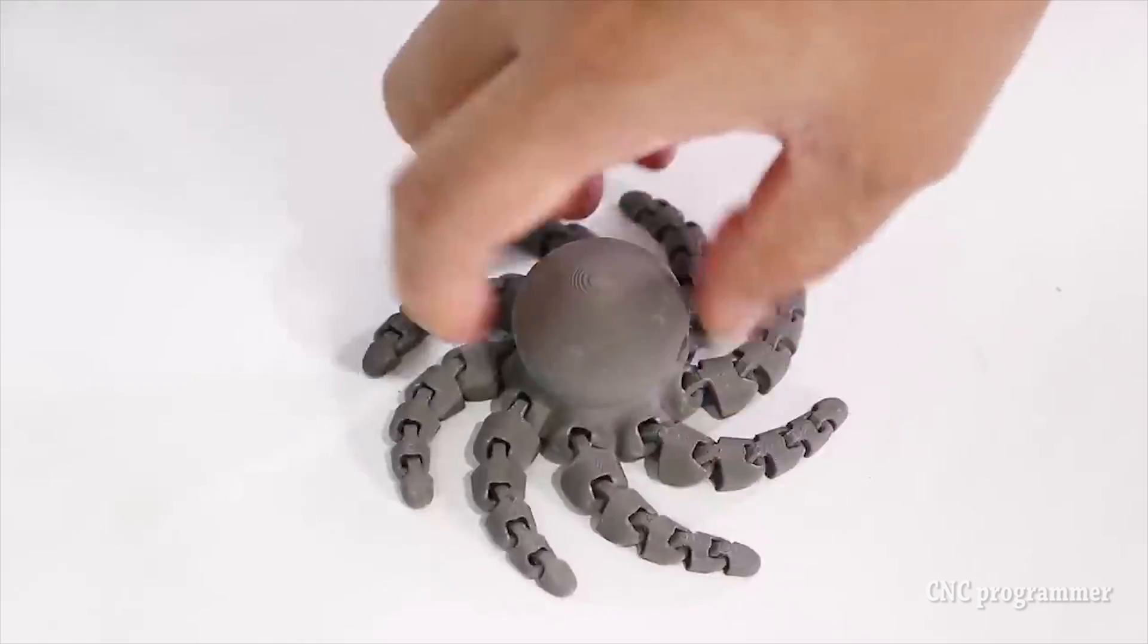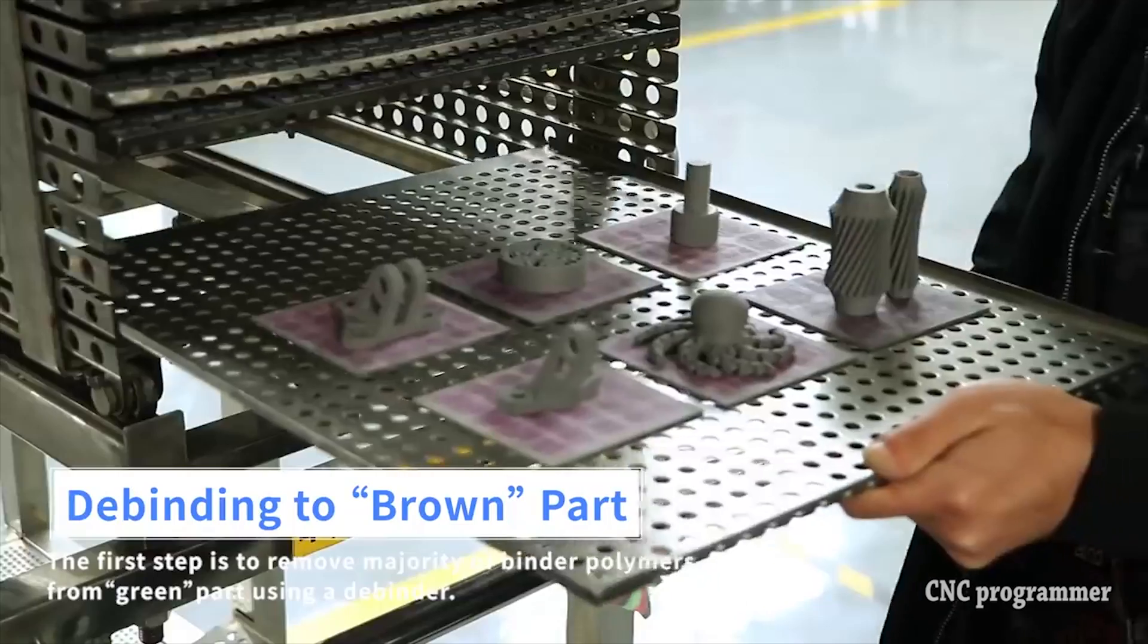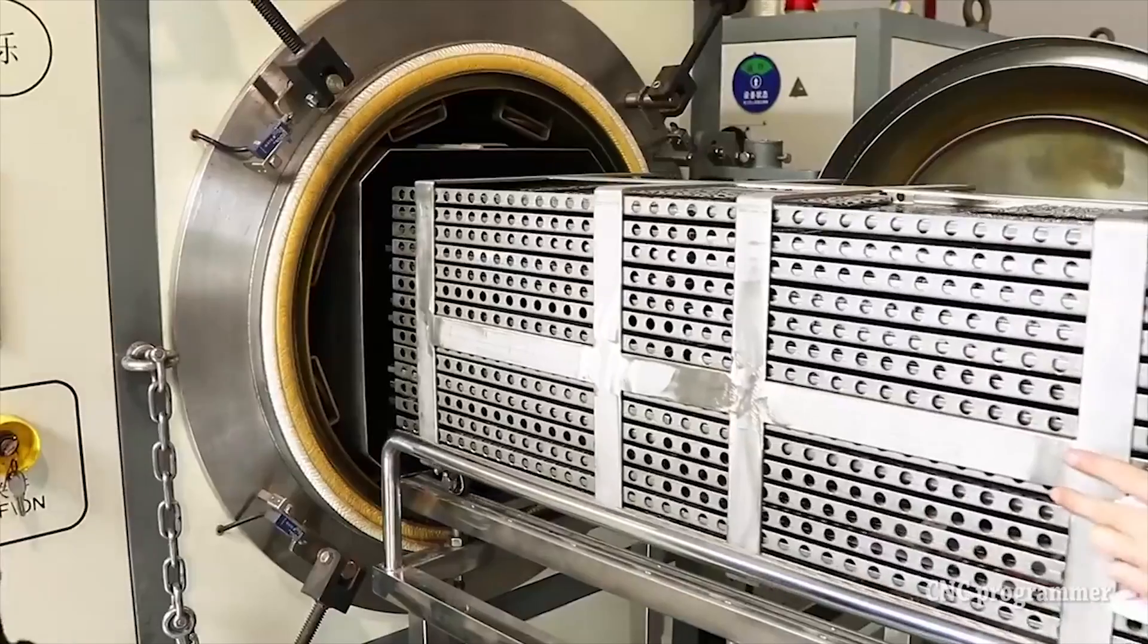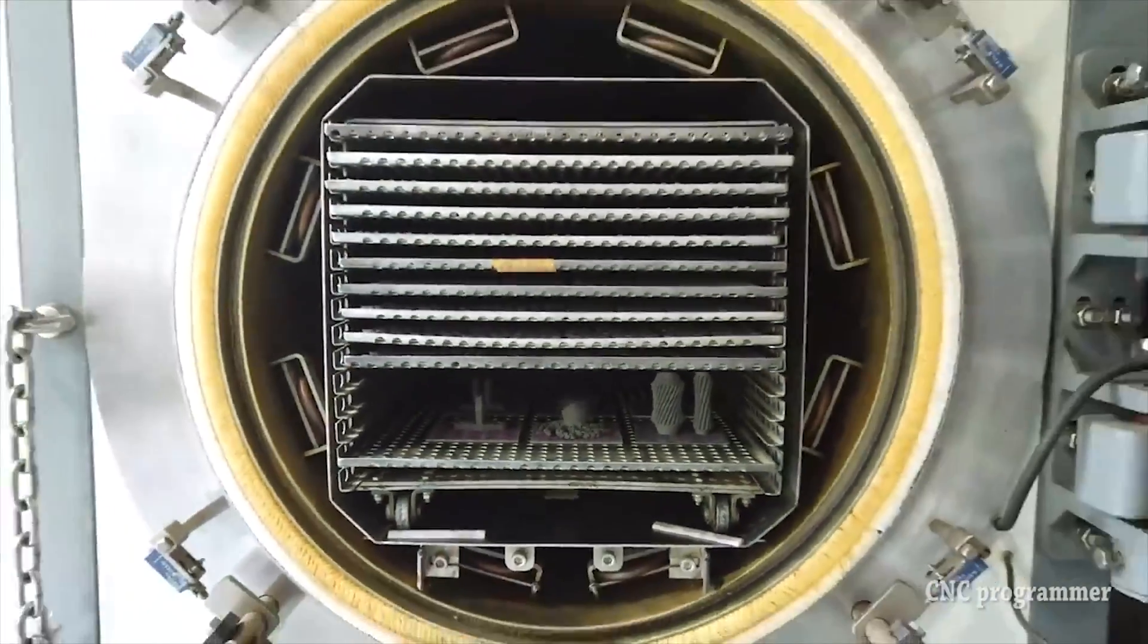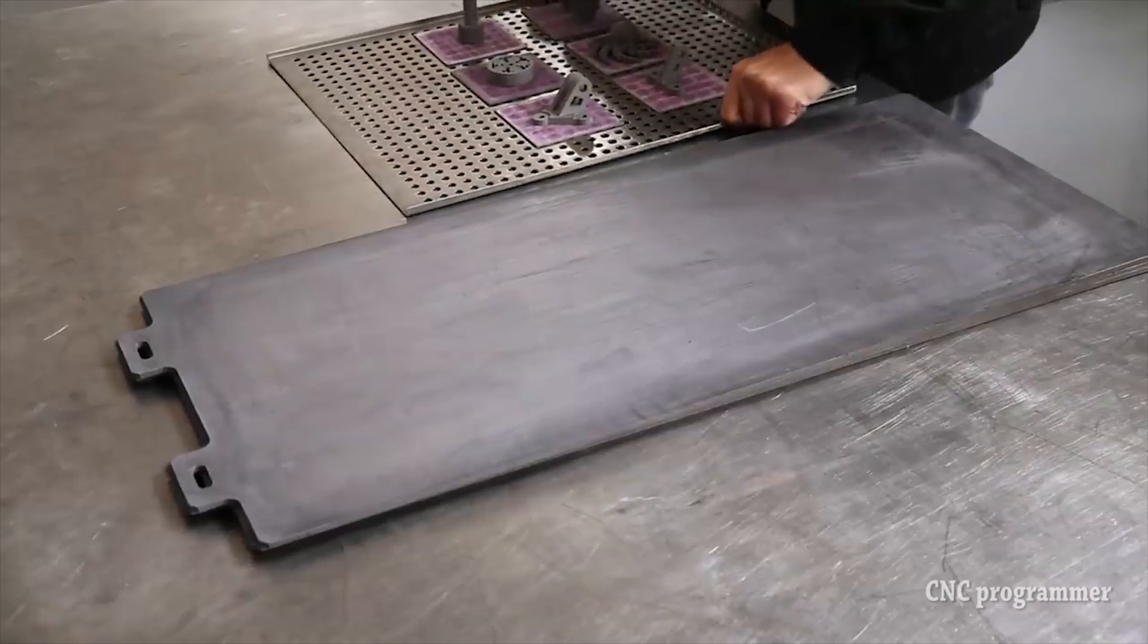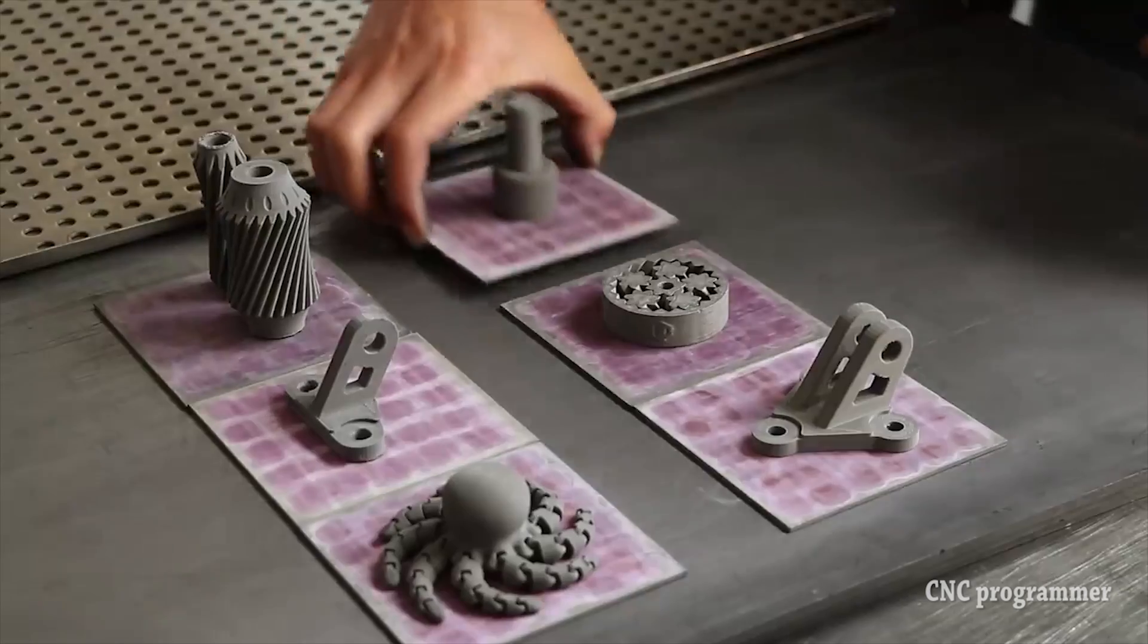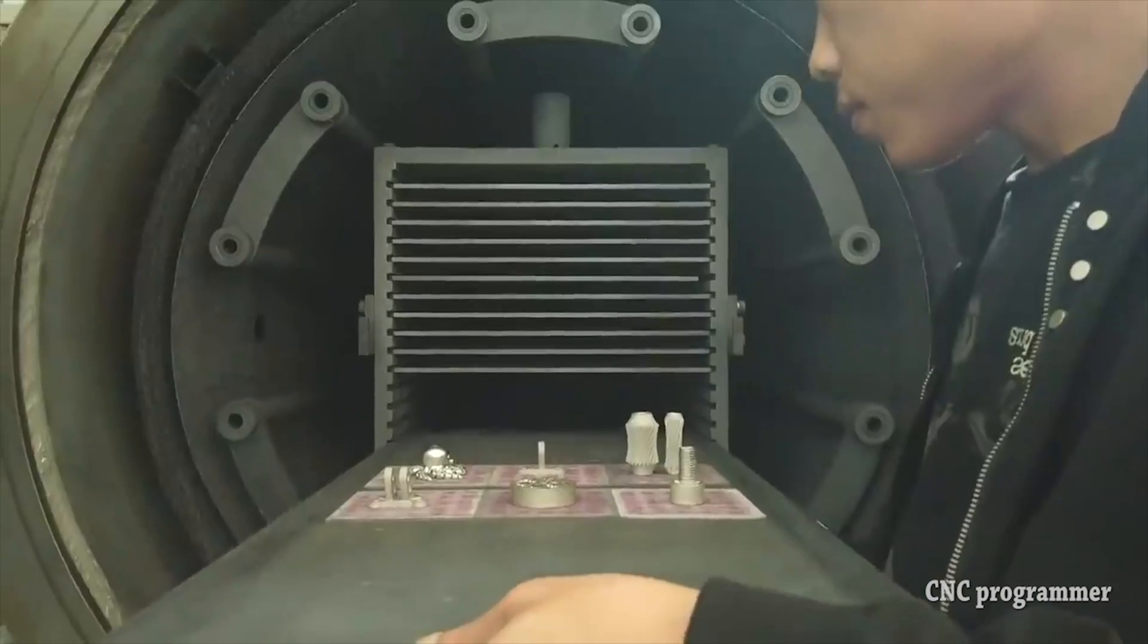Advantages of FDM Metal Printing: Cost-Effectiveness - Compared to traditional metal fabrication methods like casting or machining, FDM metal printing offers significant cost savings, particularly for low volume or custom parts. Design Freedom - Just as with traditional FDM, metal FDM allows for complex geometries and intricate designs that would be difficult or impossible to achieve through conventional manufacturing methods.